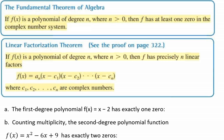You know that the n-th degree polynomial can have at most n real zeros. Now, in the complex number system, this statement can be improved. In the complex number system, every n-th degree polynomial function has precisely n zeros.